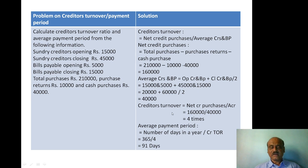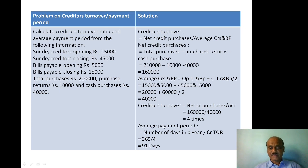Next, average payment period equals number of days in a year divided by creditor turnover ratio. Number of days in a year is 365 divided by creditor turnover ratio of 4 times. 365 divided by 4 equals 91 days. So the average payment period is 91 days, meaning creditors are paid on average every 91 days.